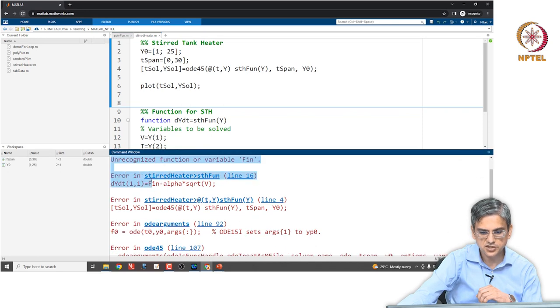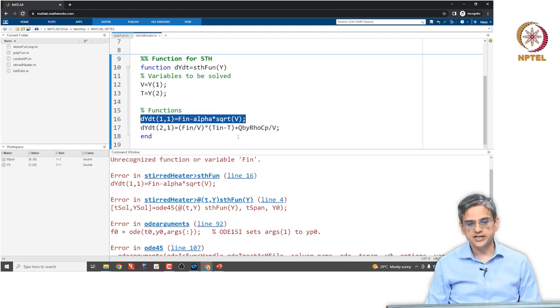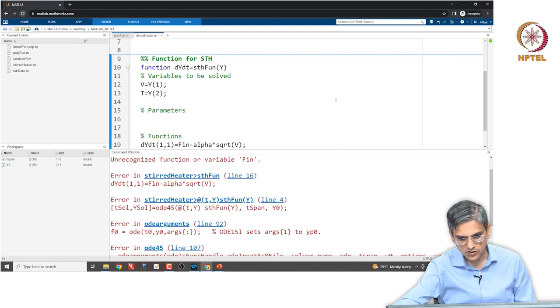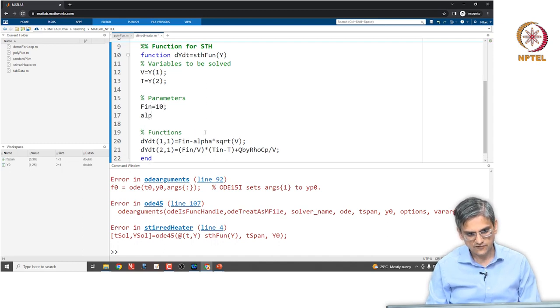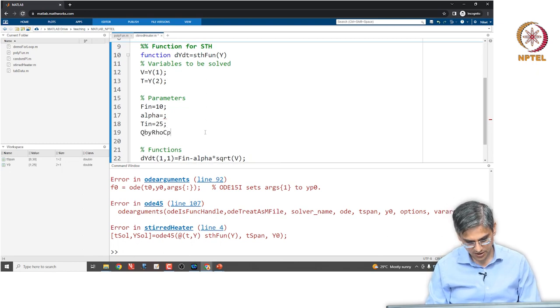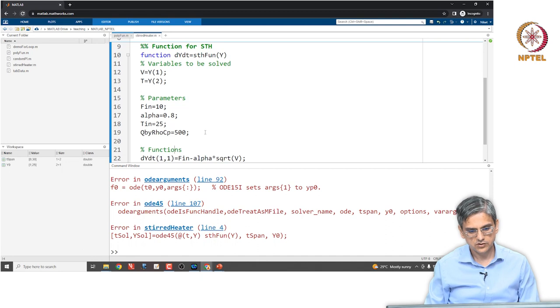Stirred tank heater and then there is an error. What is the error? Unrecognized function or variable f in, in line number 16. Why did we get the error? We got the error because we have not defined the parameters. Let us define the parameters over here. What are the parameters? f in is 10, alpha is 0.8, t in is 25 and q by rho cp is 500. Let us see what happens.